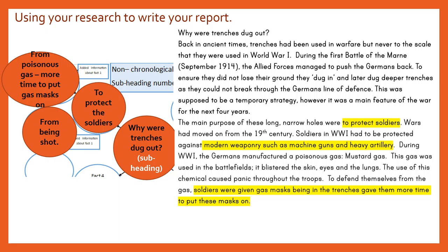So why were trenches dug out? Back in ancient times, trenches had been used in warfare but never to the scale that they were used in World War I. During the first battle of the Marne in September 1914, Allied forces managed to push the Germans back. To ensure they did not lose their ground, they dug in and later dug deeper trenches as they could not break through the Germans' line of defence. This was supposed to be a temporary strategy. However, it was a main feature of the war for the next four years.